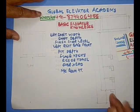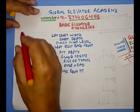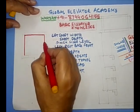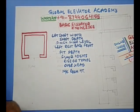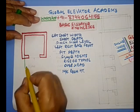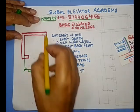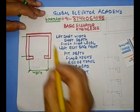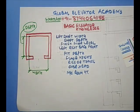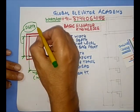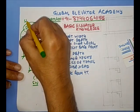So let's start one by one. You can see here that we have already made a shaft here. So let's try to figure it out. This is a lift shaft I am drawing for you. The distance from here is width, and the distance from here to here is depth. So this is called W, and this is called D — depth. Sometimes you call it SW, shaft width, and shaft depth.